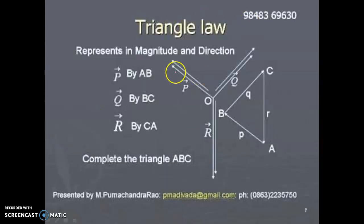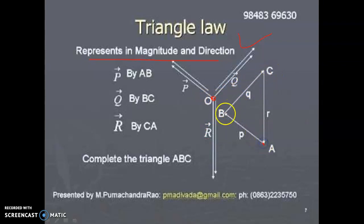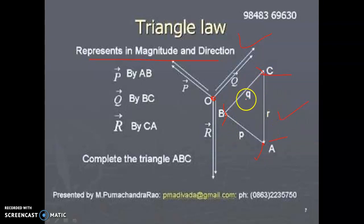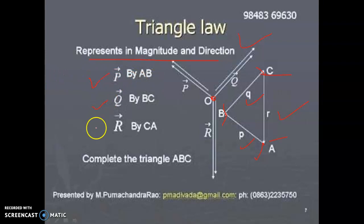This formula is used to calculate the resultant using the triangular law of forces. In a vector diagram with points A, B, and C: the side from A to B represents P, from B to C represents Q, and from A to C represents R, completing triangle ABC. So P by AB equals Q by BC equals R by CA.